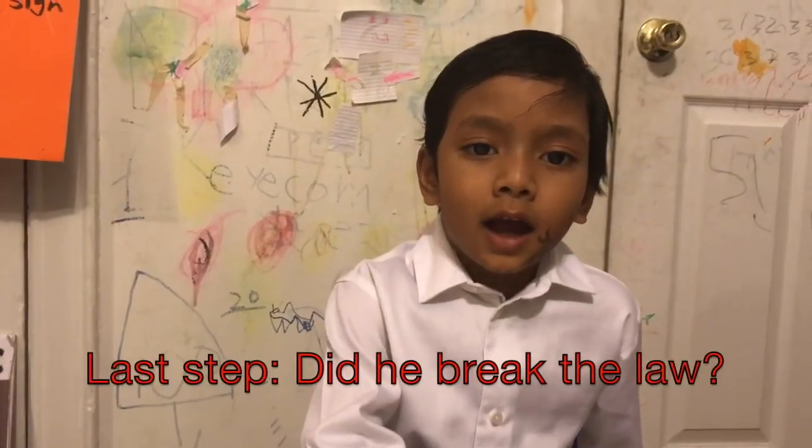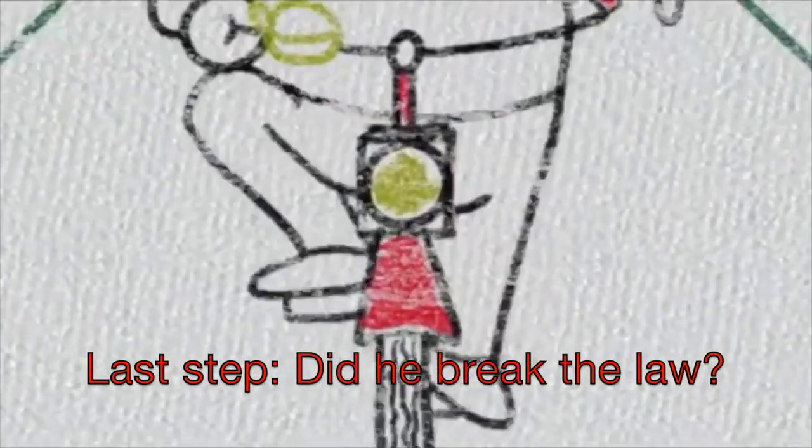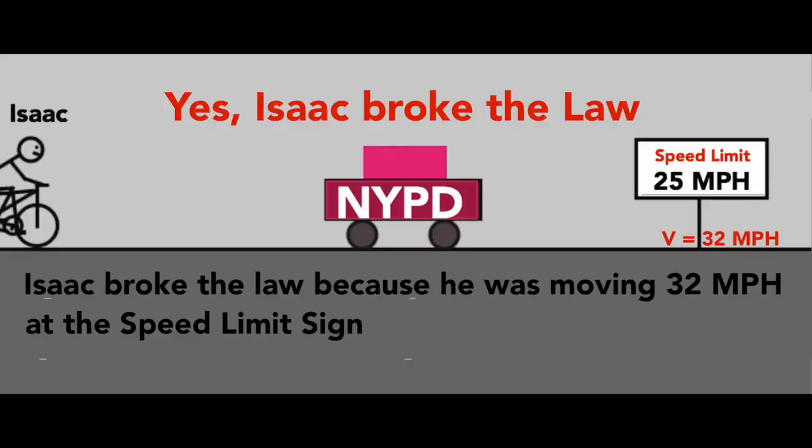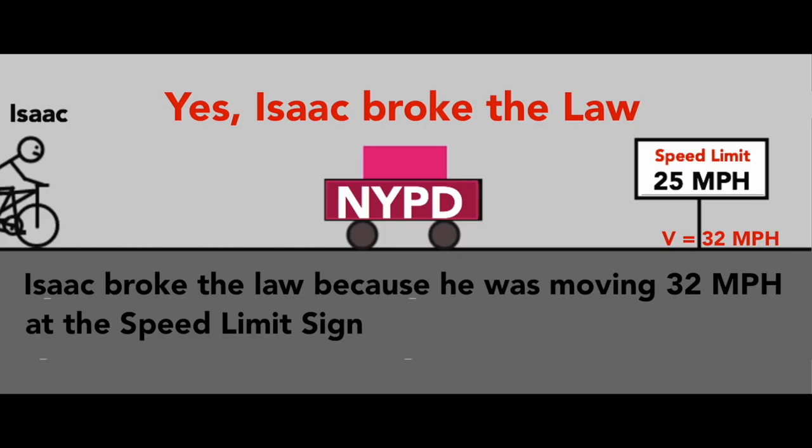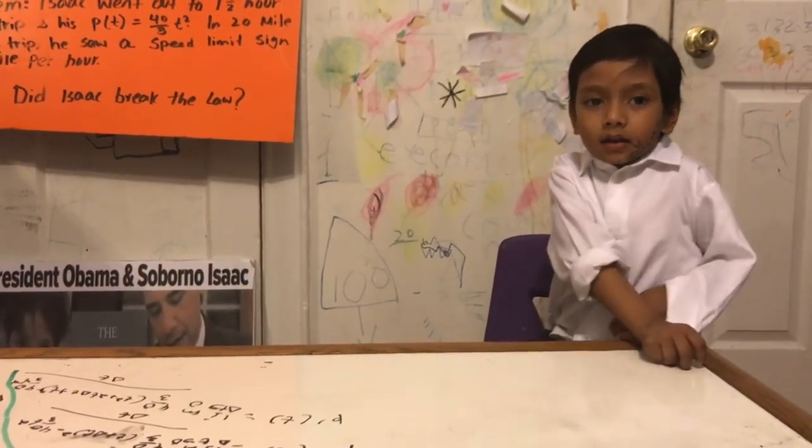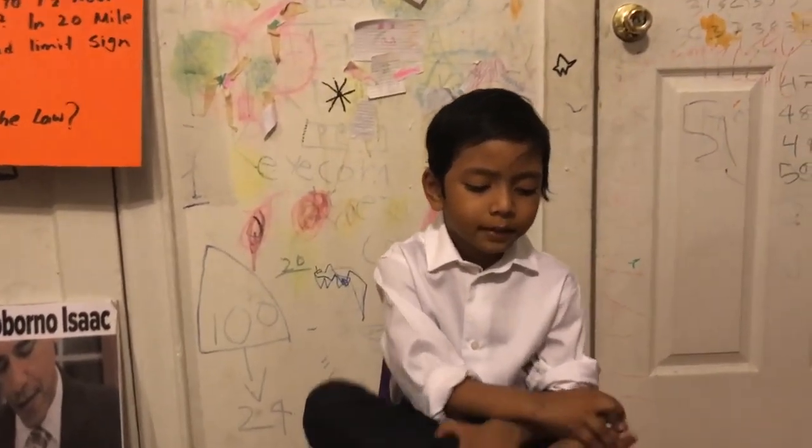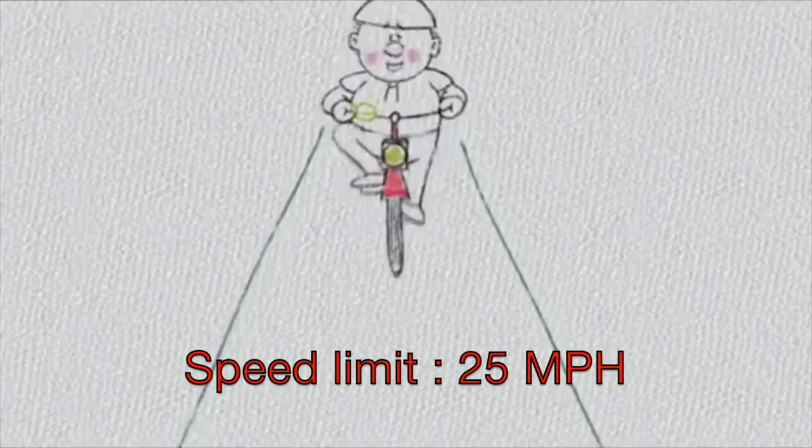So p prime of 1.22 is equal to 80 over 3 times 1.22, which is equal to 32. I'll ask you a question guys. Did Isaac break the law or he didn't break the law? He broke the law. Because he was moving 32 mph at 25 mph speed sign. So Isaac actually broke the law because 32 mph is over 25 mph, which was the speed limit. That means Isaac was moving faster than speed limit.